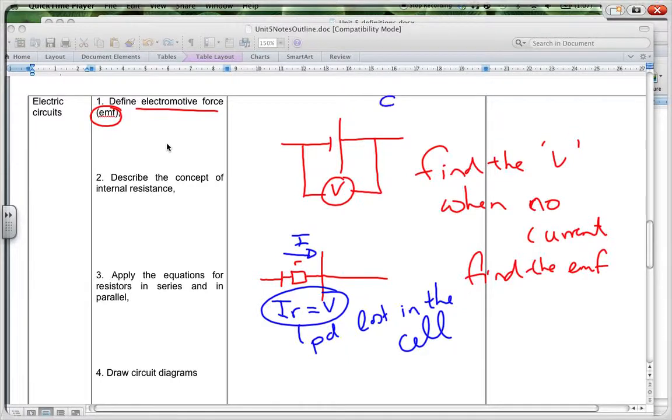The formula for this is this. Your EMF is denoted by this funny E over here, EMF. And it's equal to I big R plus small r.